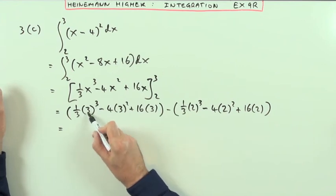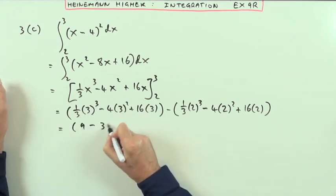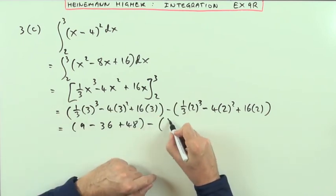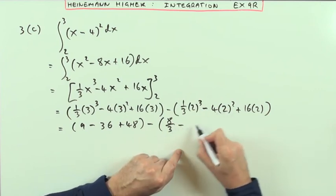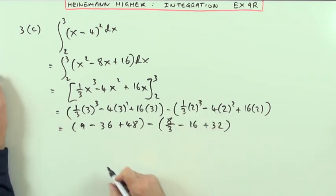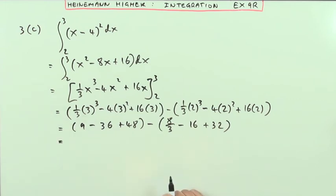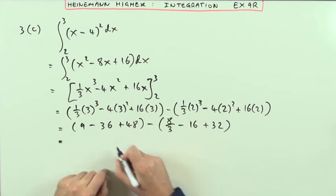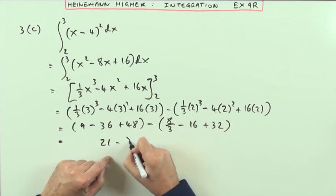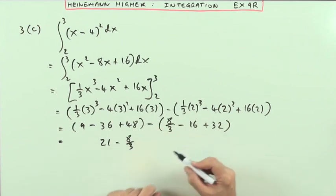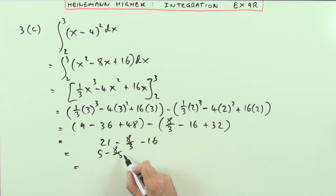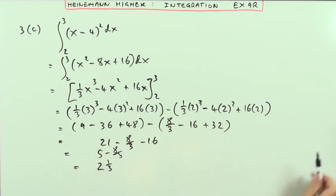That knocks out a power and leaves 9, then 4 nines is 36, and 3 sixteens is 48. Unfortunately there's 8 thirds as the fraction. Working the two parts separately: 9 minus 36 plus 48 gives positive 21 minus 8 thirds; then minus 8 thirds gives minus 16 plus 32 so that's 5. Working it out: 21 minus 8 thirds, and 8 thirds is 2 and 2 thirds, leaving 2 and 1 third as the answer.